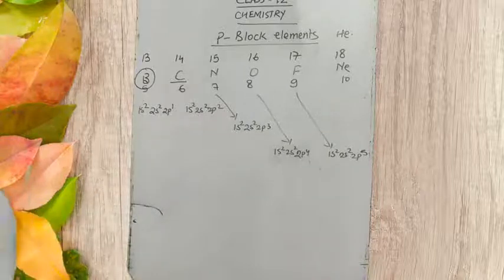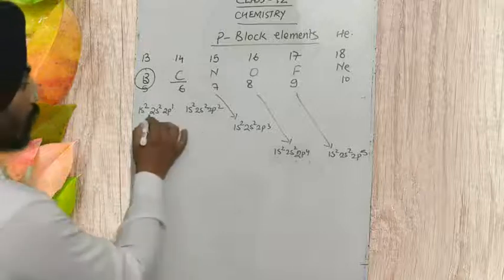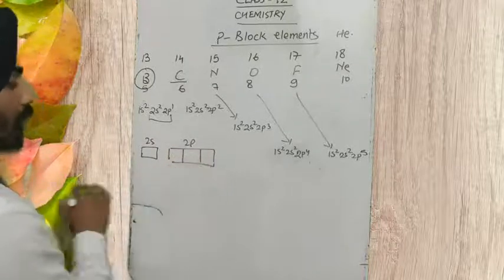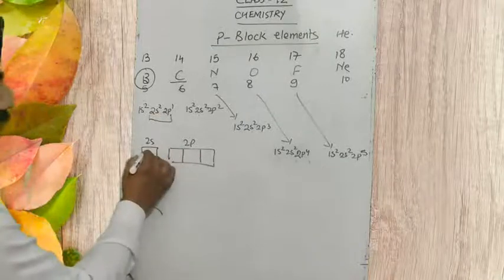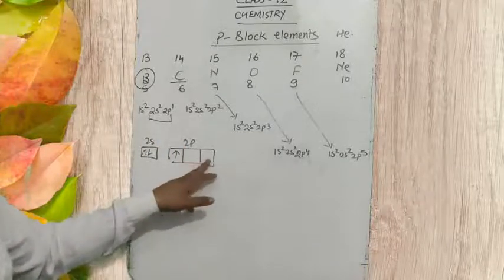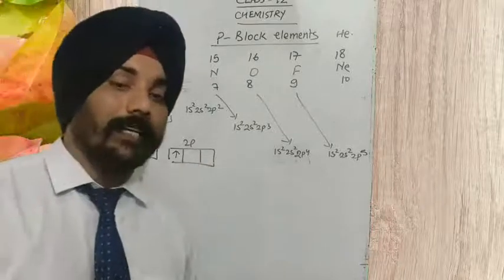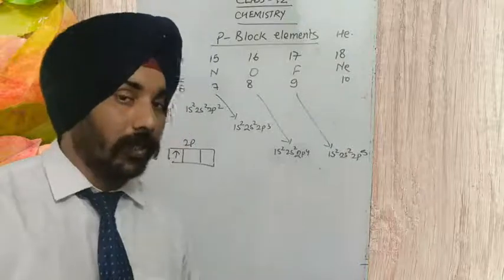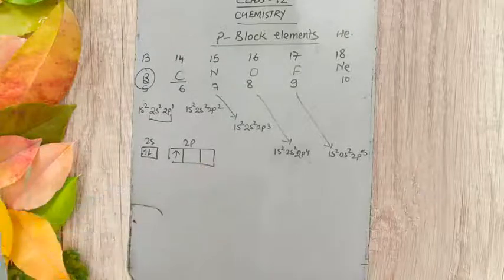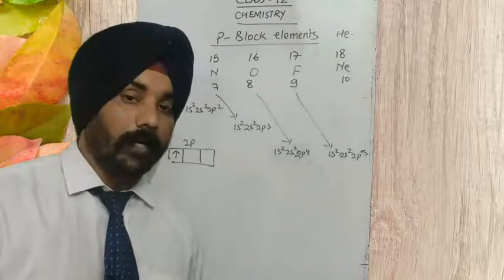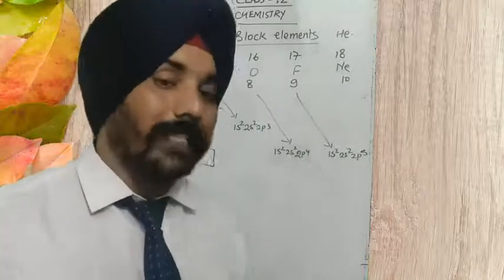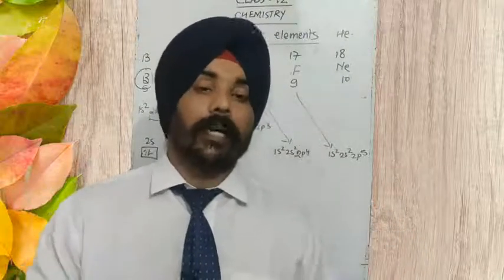So how many orbitals are there in the valence shell? There is one 2s and three in 2p. If we fill these electrons in 2s and 2p, there are only 4 orbitals available. So up to what extent can it expand its electronic configuration? It can expand up to 4 orbitals only, because it has only 4 orbitals available. So the maximum covalency that can arise is up to 4.